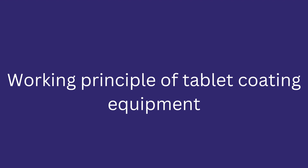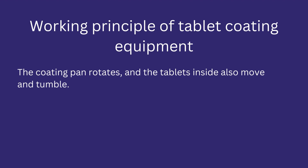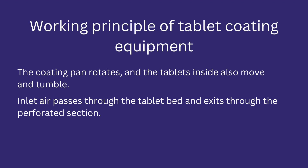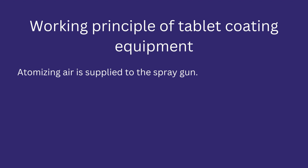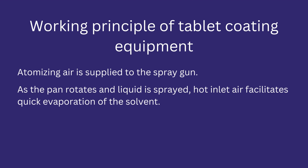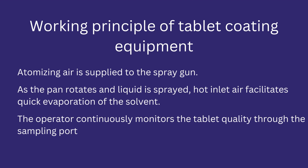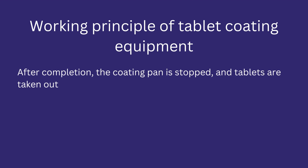Working principle: the coating pan rotates and the tablets inside also move and tumble. Inlet air passes through the tablet bed and exits through the perforated section. A peristaltic pump is turned on to start the liquid supply to the spray gun, and atomizing air is supplied to the spray gun. As the pan rotates and liquid is sprayed, the hot inlet air facilitates quick evaporation of the solvent. The operator continuously monitors tablet quality through the sampling port. After completion, the coating pan is stopped and tablets are removed.